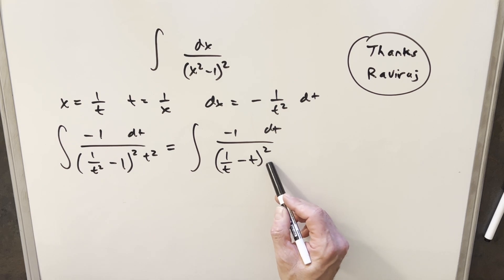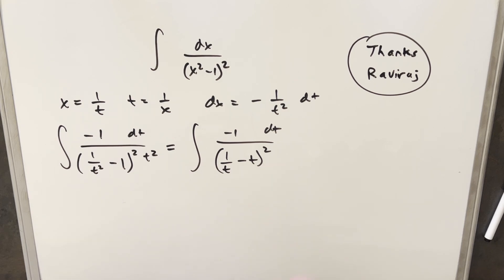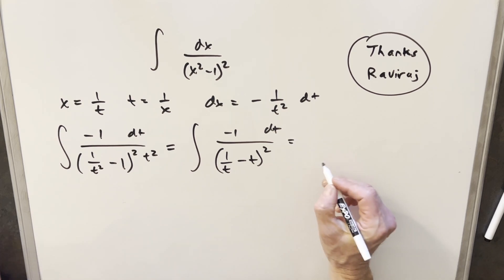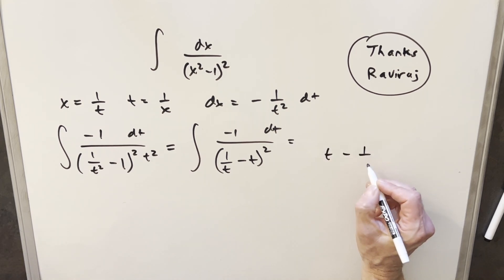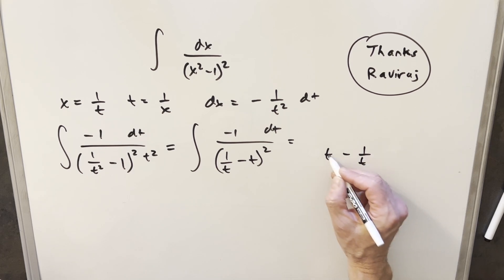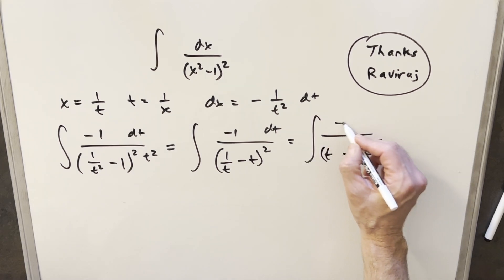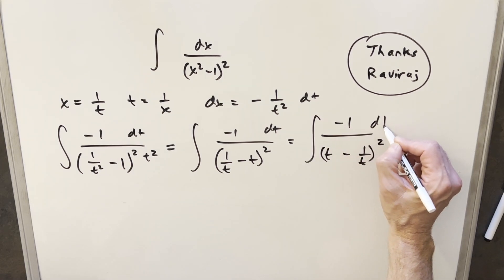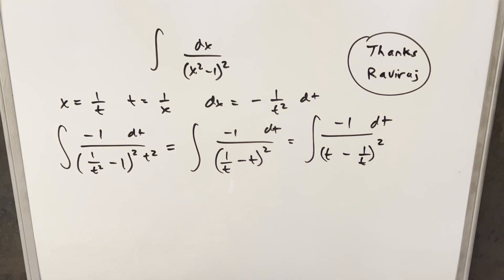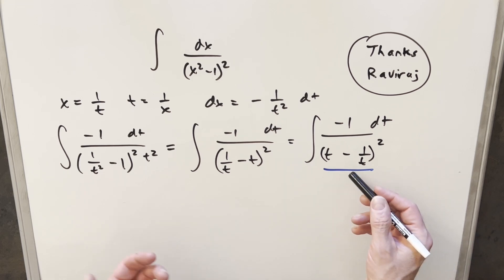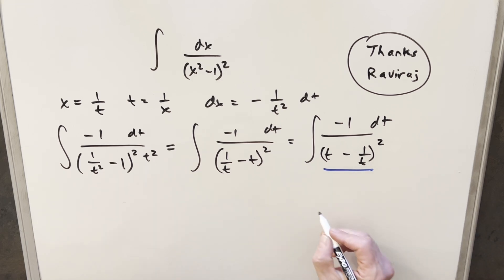Now because this is squared, the sign doesn't matter, so I can rearrange and write it as (t minus 1/t) squared. That's not going to change it, and we still have minus 1 dt in the numerator. From here, I want to notice that we have this t minus 1 over t, and we could do an alternative factoring of this.